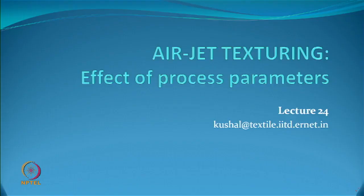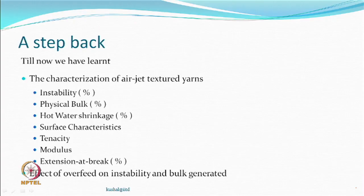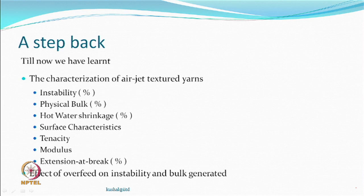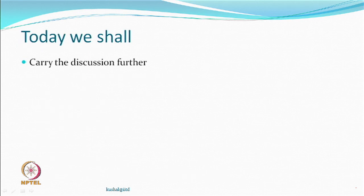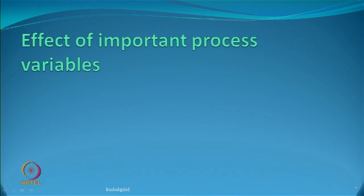We continue with our discussion on air jet texturing with some of the process parameters which may be affecting the properties. In the last discussion we talked about various methods of characterizing air jet textured yarn — instability and physical bulk are the two more important properties. Other things like shrinkage, surface characteristics, tenacity, and modulus were also discussed, along with the effect of overfeed on instability and bulk.